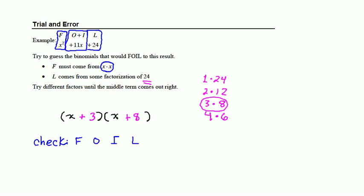F is coming from x times x, which is x squared. O is coming from the outer product, which is x times 8. I is coming from the inner product, which is 3 times x.